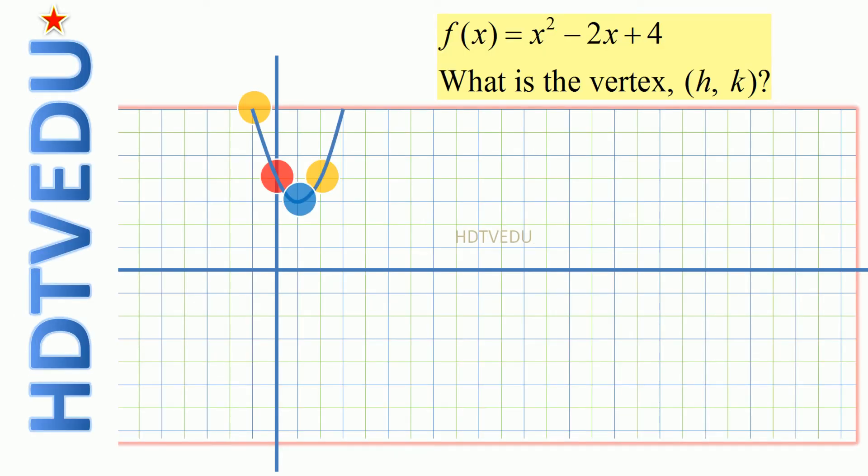So here is our function f of x equals x squared minus 2x plus 4. When we substitute x equals 0, what do we get? 4. When we substitute x equals 1, what do we get? 3. So h k is 1, 3.